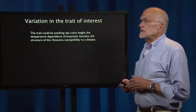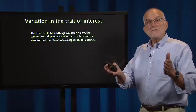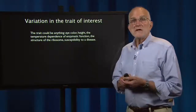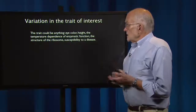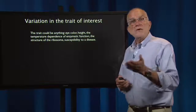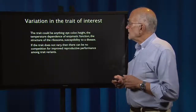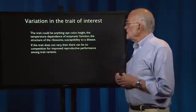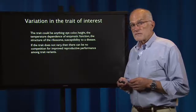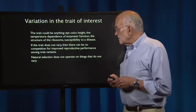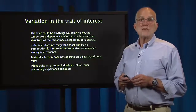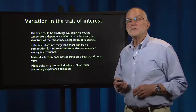Variation in the trait is another key factor. The trait could be anything: eye color, height, the temperature dependence of an enzymatic reaction, the structure of the ribosome, or susceptibility to a disease. Those are all possible traits that could be under selection. If the trait does not vary, there can be no competition for improved reproductive performance among trait variants. Natural selection does not operate on things that do not vary. Most traits do vary among individuals, and most traits can therefore potentially come under selection.